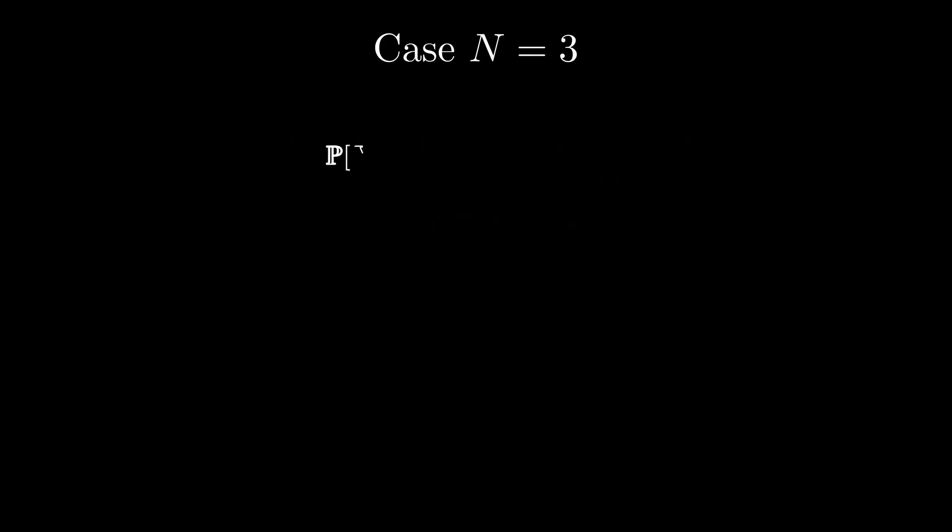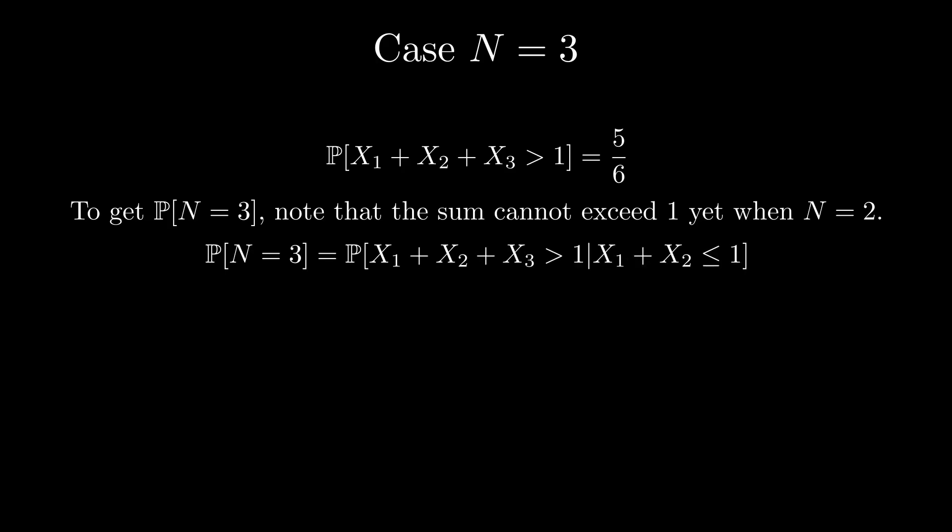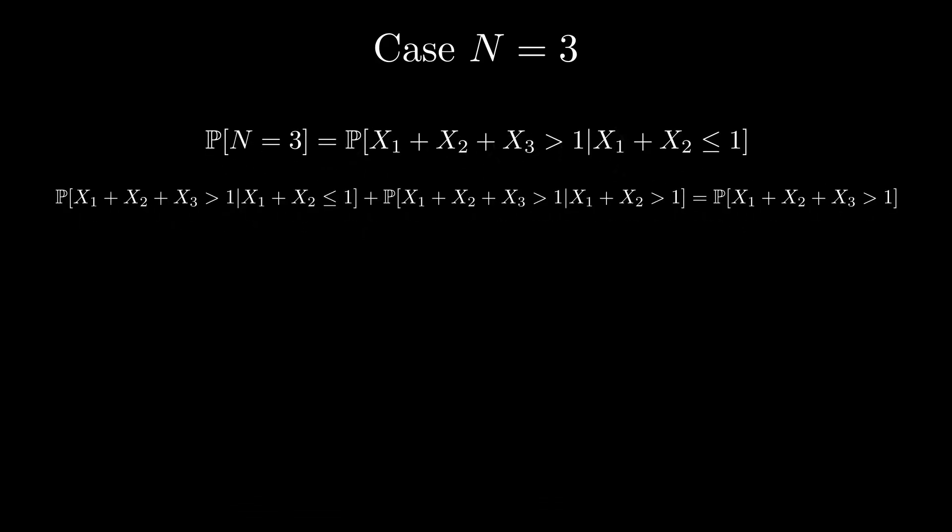But we're not done yet. To get the probability that big N equals 3, note that the sum cannot exceed 1 yet when N equals 2. So the probability that big N equals 3 is the conditional probability that the sum of the first three variables exceeds 1, but the sum of the first two variables does not exceed 1. We can use the law of total probability to get the following expression. Note that if the sum of the first two variables already exceeds 1, then the sum of the first three variables will of course exceed 1.